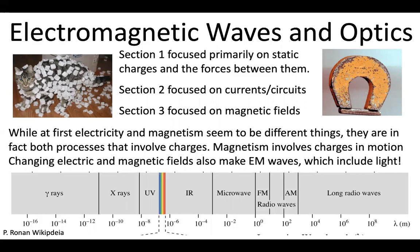So what we're going to be talking about in this section is understanding the properties of electromagnetic waves in general, which includes things from radio waves, to infrared light, to visible light, to ultraviolet light, x-rays, and even gamma rays.